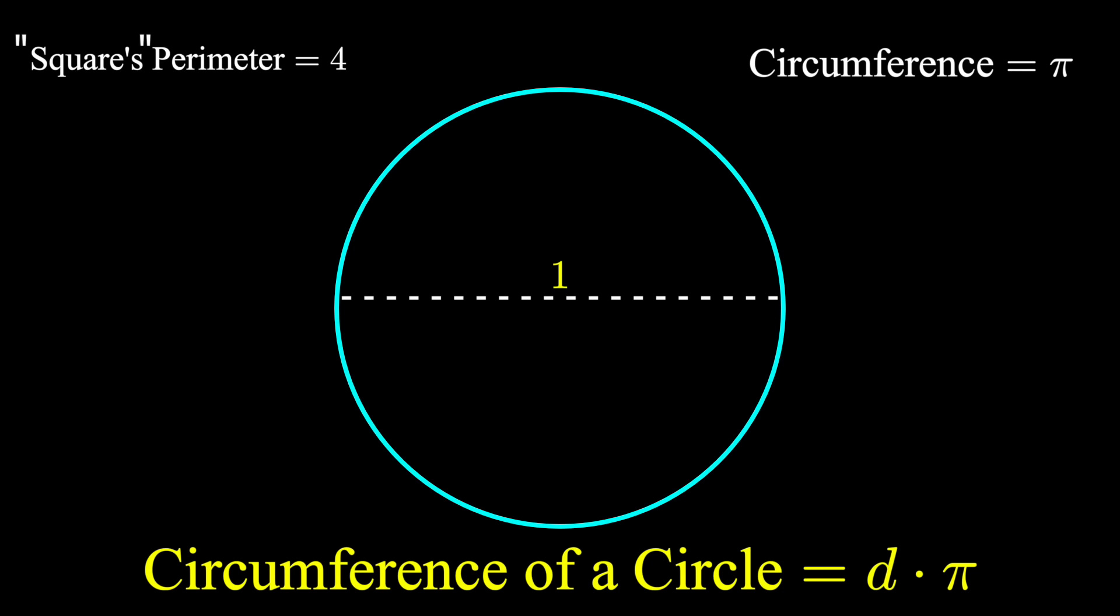But the perimeter of this shape approached that circumference and its length was 4. So pi is 4. Unless this is the conclusion that you want to make, and I don't think that it is, we need to figure out what's going wrong with this.